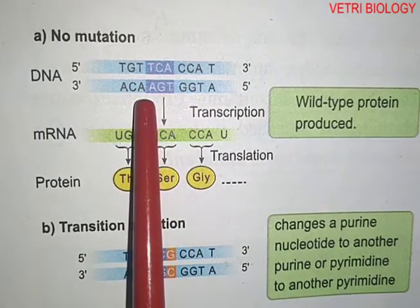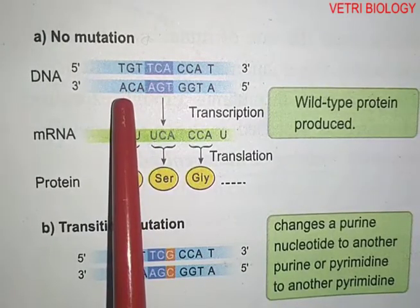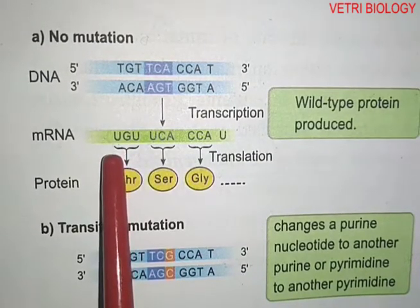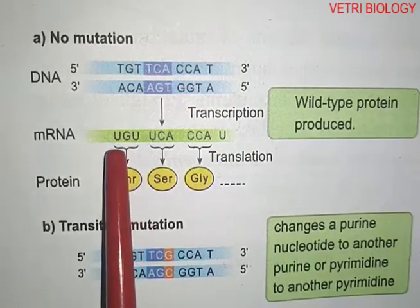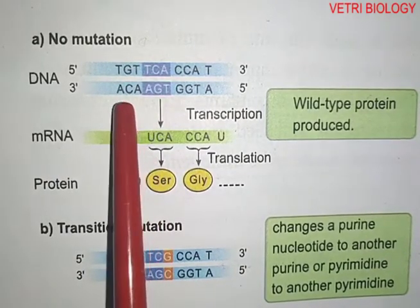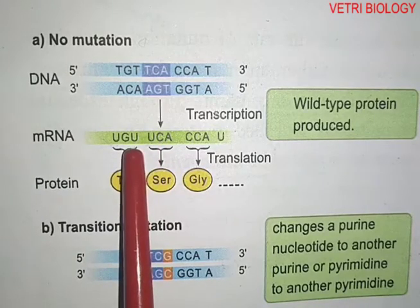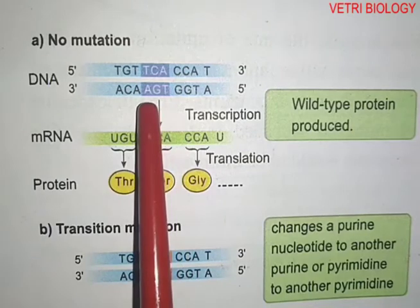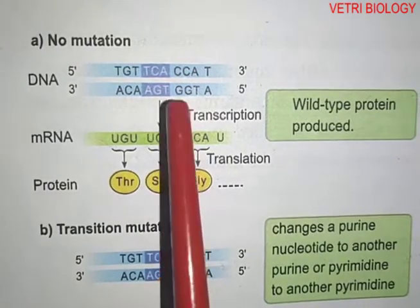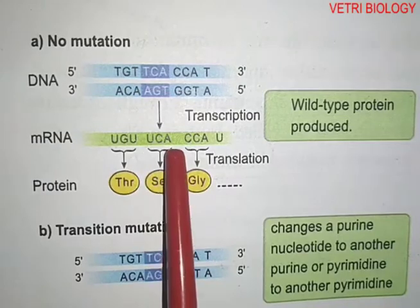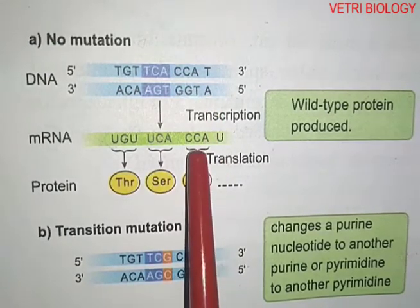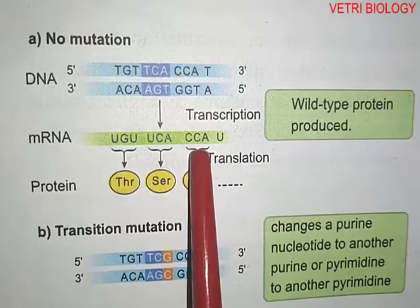The ACA codon on the DNA template strand is transcribed to RNA. Using complementary base pairing, ACA on the template gives UGU on the mRNA. The next codon AGT gives UCA, and GGT gives CCA on the mRNA.